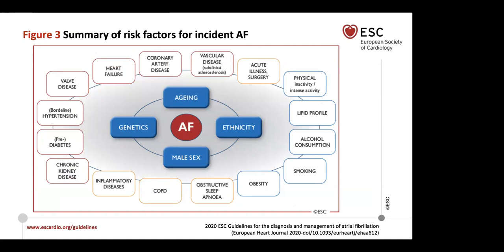Risk factors for atrial fibrillation are wide and diverse. The outer ring represents modifiable risk factors ranging from cardiac to respiratory, endocrine, and lifestyle-based — including hypertension, heart failure, vascular heart disease, dyslipidemia, alcohol consumption, obesity, COPD, and sleep apnea. The inner ring represents non-modifiable risk factors including aging, genetic predispositions, male sex, and ethnicity — particularly European descent, which places individuals at higher risk for atrial fibrillation.